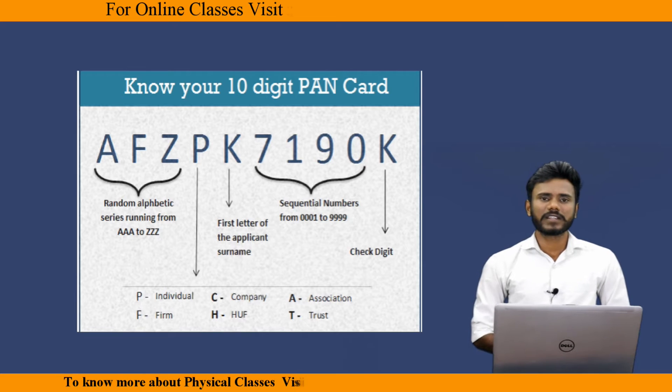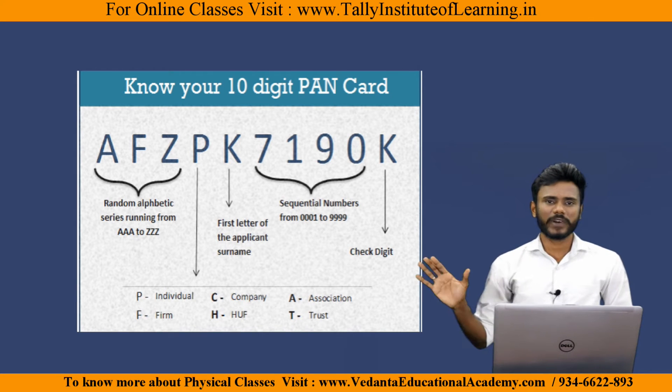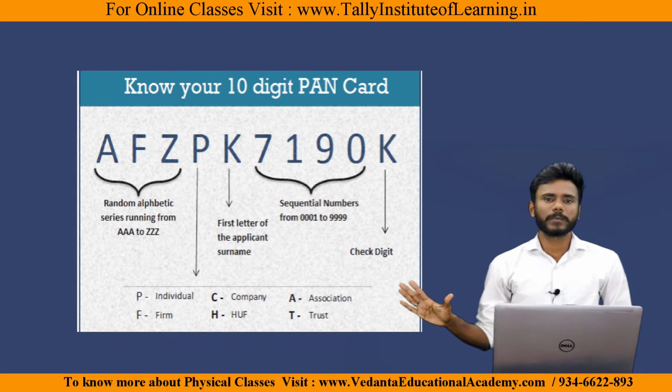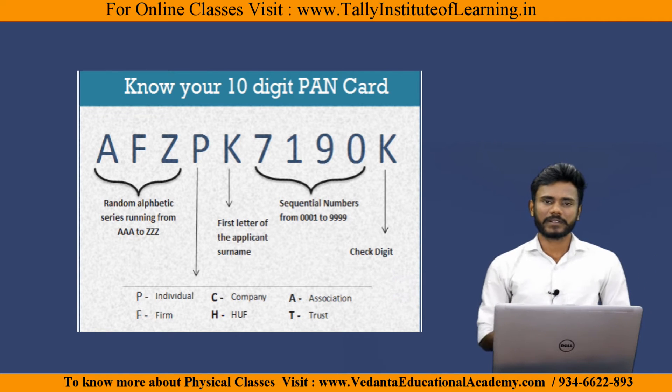A PAN card has a total of 10 digits: the first 5 are alphabets, followed by 4 numeric characters, and then 1 final alphabet.